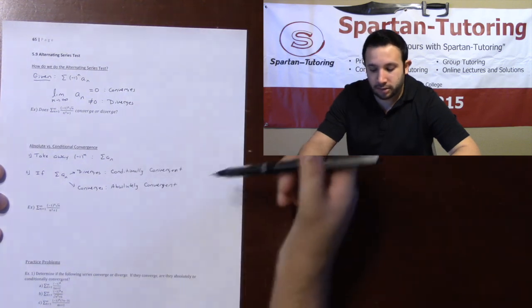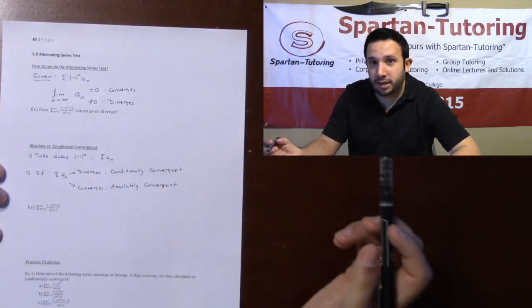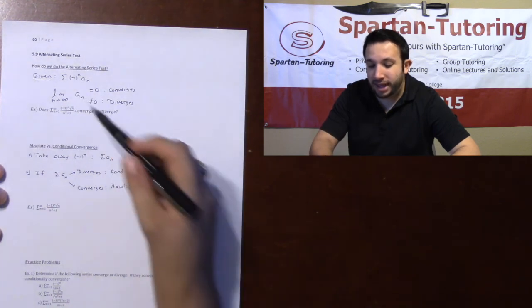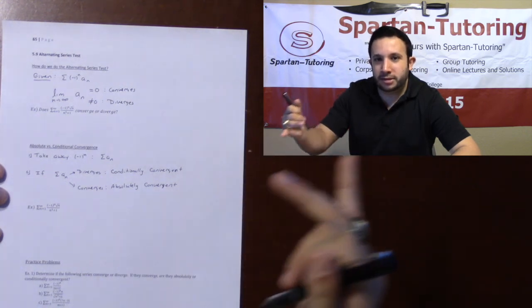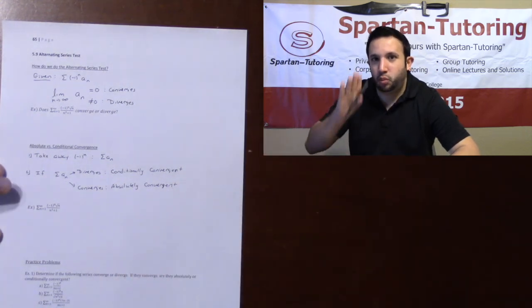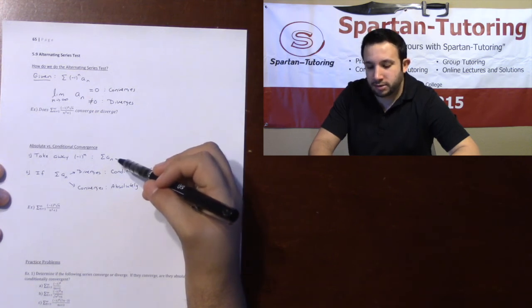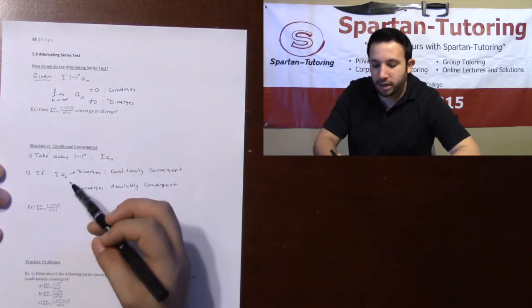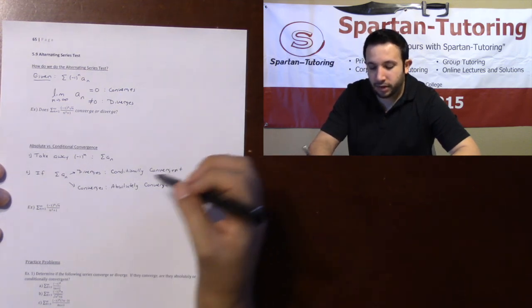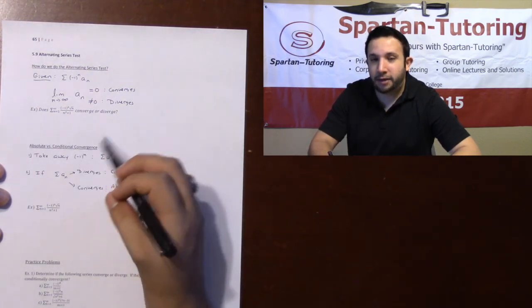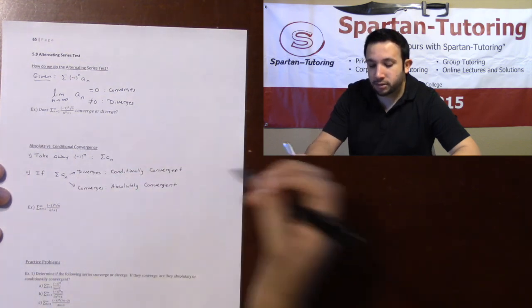If it converges, a follow-up question is: is it absolutely or conditionally convergent? What you do is take away the negative one to the n, leaving just a_n — a brand new series. Apply the limit comparison test, direct comparison test, integral test, or another test. If this new series diverges, it's conditionally convergent; if it converges, it's absolutely convergent.